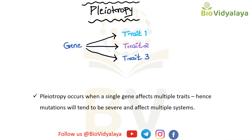Let's see what is meant by pleiotropy. The word pleiotropy comes from two Greek words, pleion and tropos. The meaning of pleion is 'more' and tropos is 'way.' So, in the case of pleiotropy, a single gene is affecting multiple characters, or a single gene is responsible for more than one trait. That is called pleiotropy, and such genes are called pleiotropic genes.